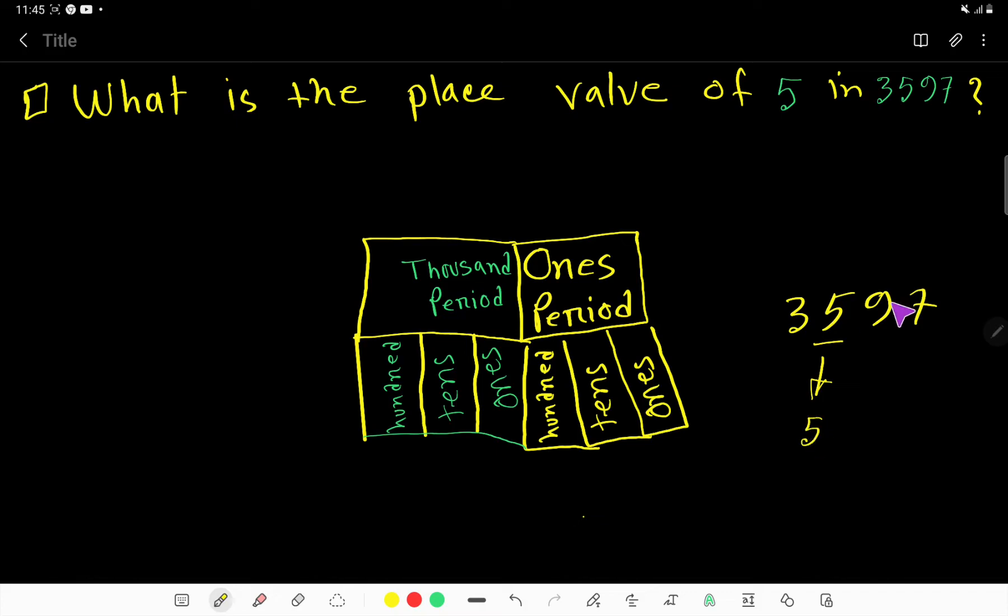Write 5 and now count the number of digits after 5. After 5 we have two digits, so for two digits we'll write two zeros. So the place value of 5 is 500.